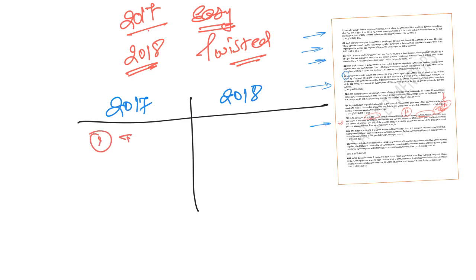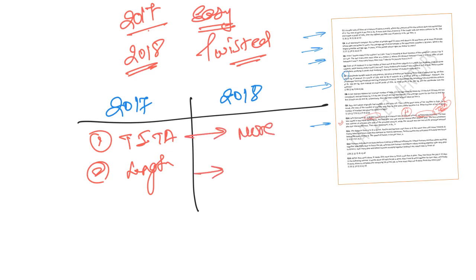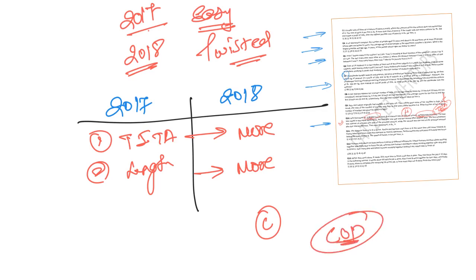There were two major things that changed the level of difficulty for quants between 2017 and 2018: number one, TITA questions, and number two, the length of the questions. In 2018, there were more TITA questions and the length was longer. IIM Calcutta did not give a new pattern or invent new question types. What they did very smartly was keep the conceptual difficulty roughly the same but increase the length and add more TITA questions.